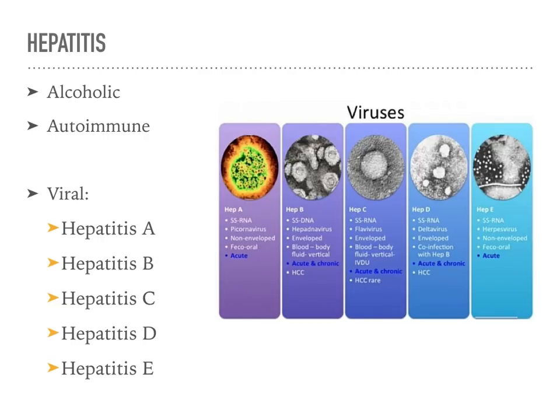Moving on to hepatitis: there are multiple forms, including alcohol-induced hepatitis, autoimmune hepatitis, and the viral forms — hepatitis A, B, C, D, and E.